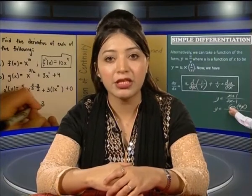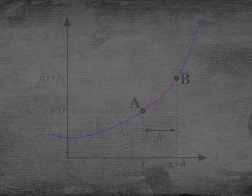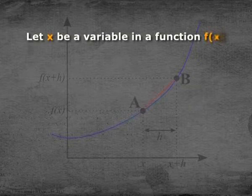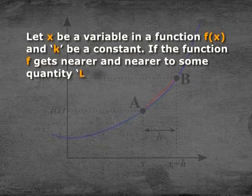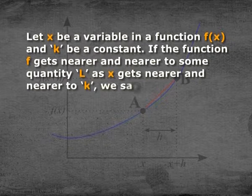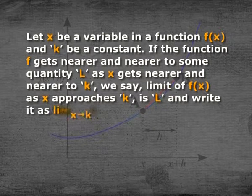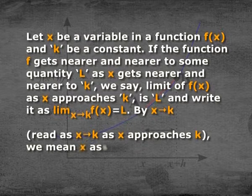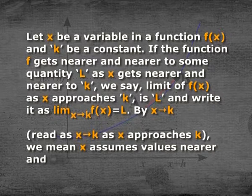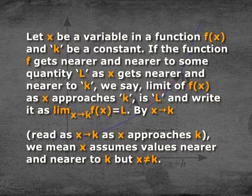To begin with, we shall first start with the concept of limit. Let x be a variable in a function f(x) and k be a constant. If function f gets nearer and nearer to some quantity l, as x gets nearer and nearer to k, we say the limit of f(x) as x approaches k is l, and write it as: limit x goes to k of f(x) is equal to l. By x→k, we mean that x assumes values nearer and nearer to k, but x is not equal to k.